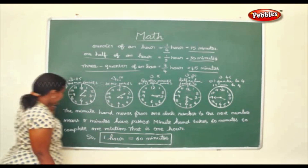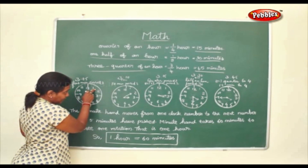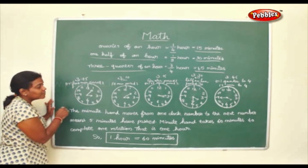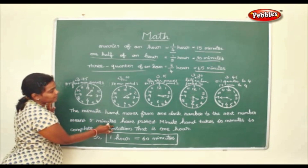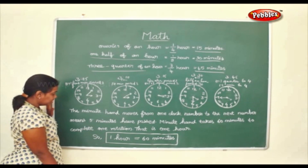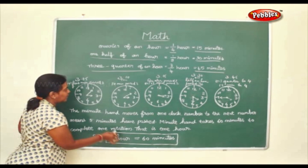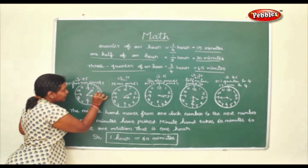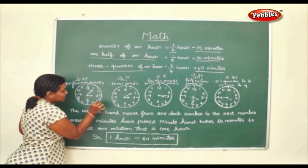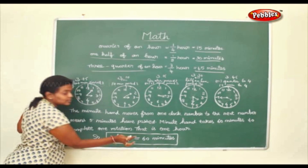The minute hand moves from one clock number to the next, which means 5 minutes have passed by. The minute hand takes 60 such steps to complete one rotation — that is called one hour. So each gap is 5 minutes, and it takes 60 minutes to complete one hour.